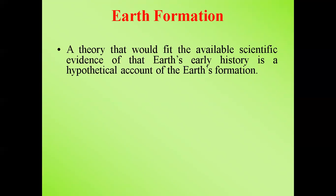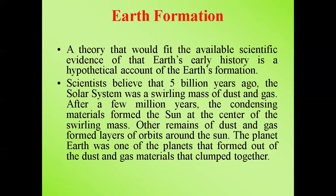Earth is part of a solar system. Scientists believe that five billion years ago the solar system was a swirling mass of dust and gas. After a few million years, the condensing materials formed the sun at the center, while other remains of dust and gas formed orbits around it. The planet Earth is one of the planets that formed out of dust and gas materials that clumped together to create the Earth's surface.